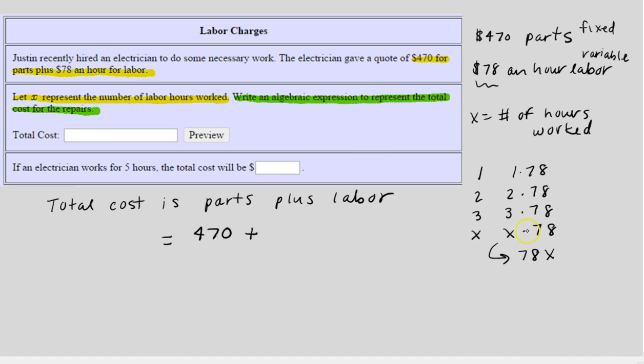So this isn't a step that you have to do, but this helps you make sense of the problem and how to set it up. So we have 470 for parts plus 78 times X for the labor. So that will be our total cost: 470 plus 78X.